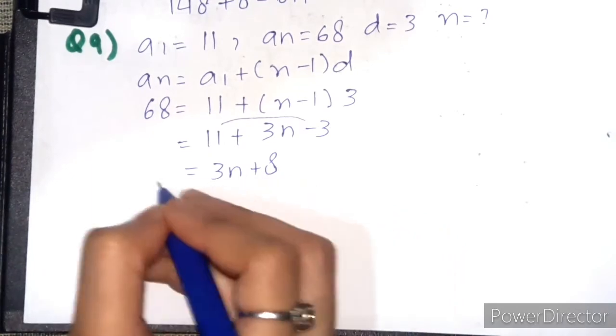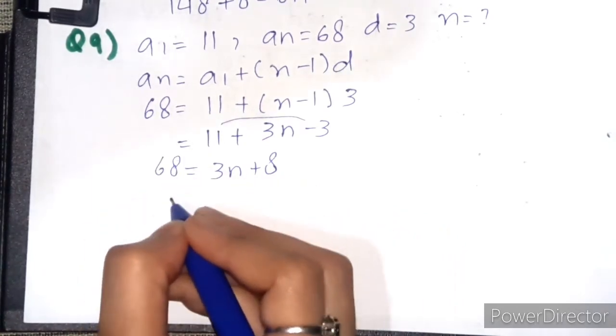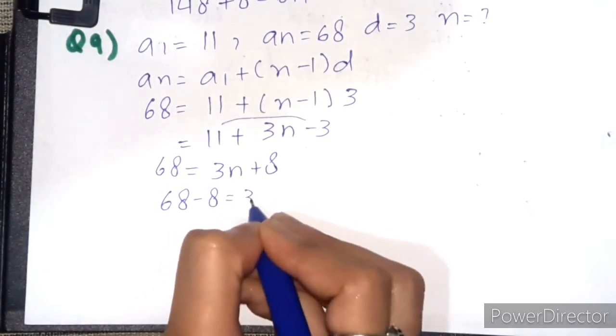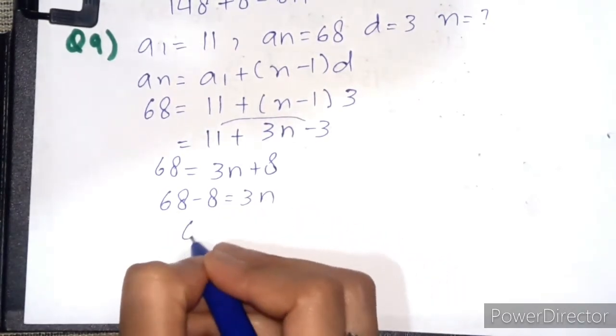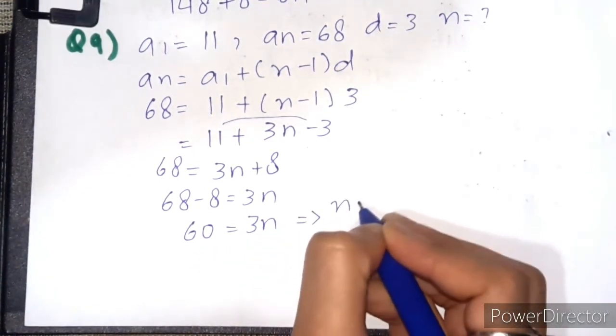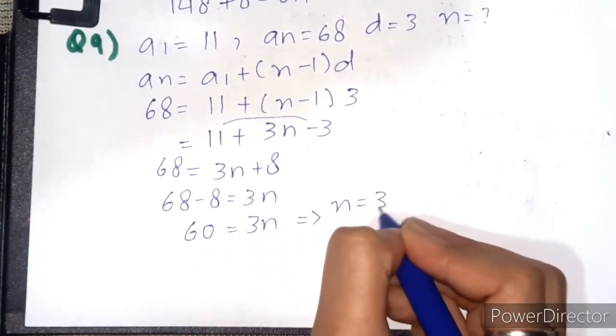So 68 - 8 = 3n. Here we get 60 = 3n, and the value of n is 60 divided by 3, so 20.